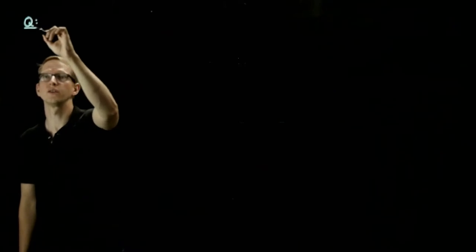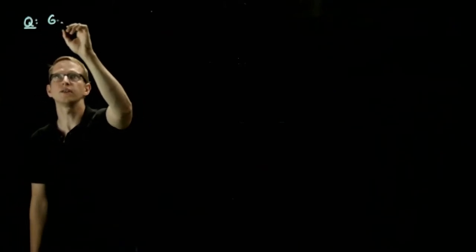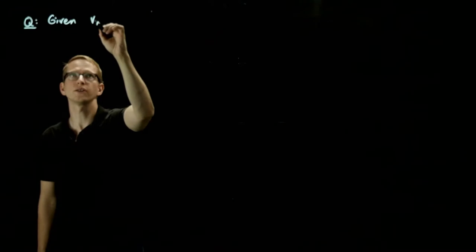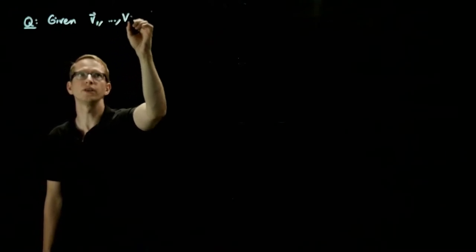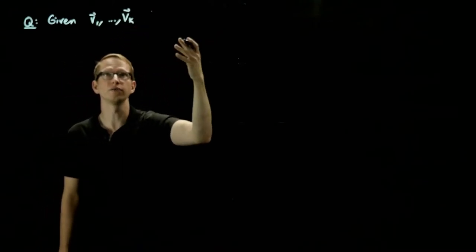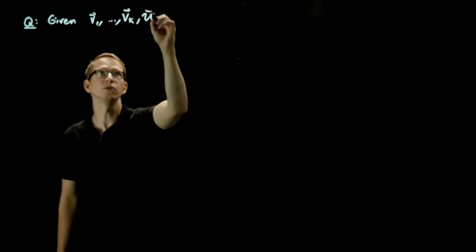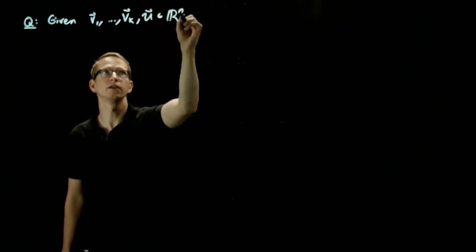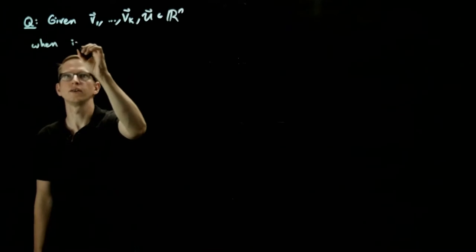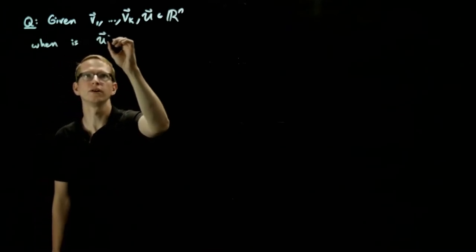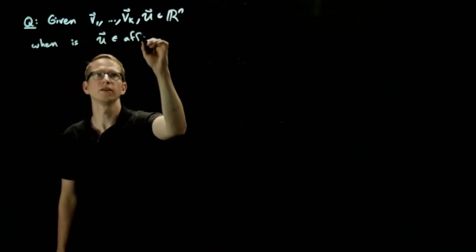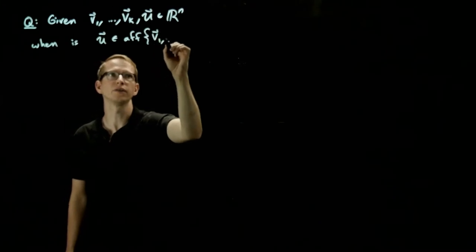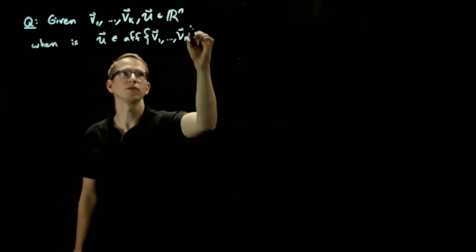So the question that we could ask is, given vectors v1 through vk and another vector u in R^n, when is u in the affine span of these vectors v1 through vk?